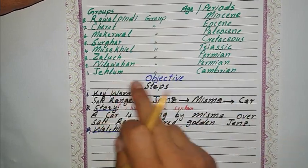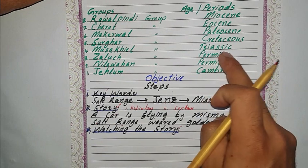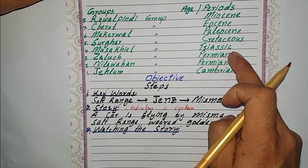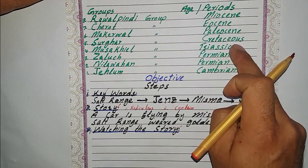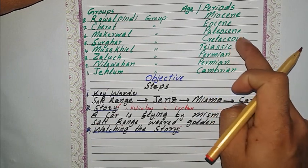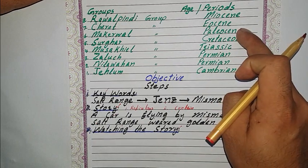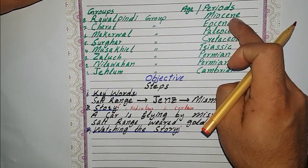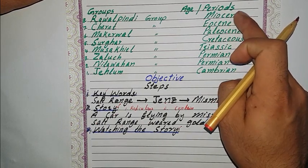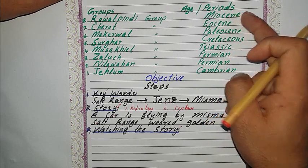The Jhelum group is Cambrian. Nilawahan and Zaluj are Permian. Musakhel group is Triassic. Surgar group is Cretaceous. Makarwal group is Paleocene. Chirad group is Eocene. Rawalpindi group is Miocene.